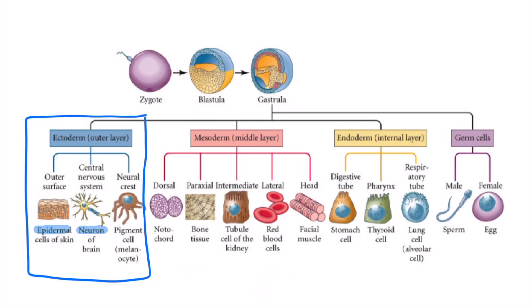Red represents mesoderm, the middle layer that gives rise to muscles, bone, connective tissue, reproductive organs, kidneys, blood, and most of the cardiovascular tissue.